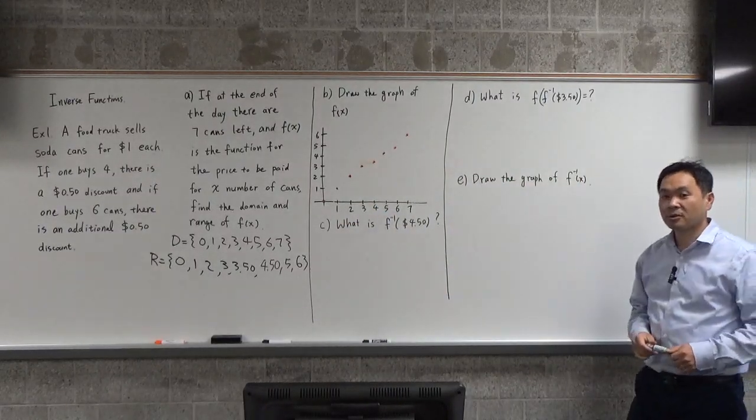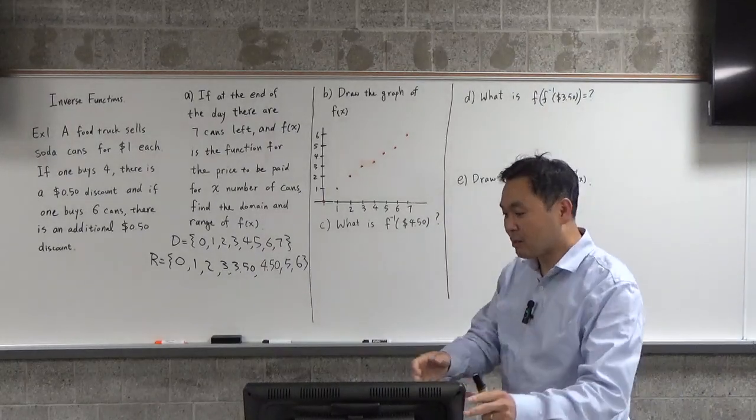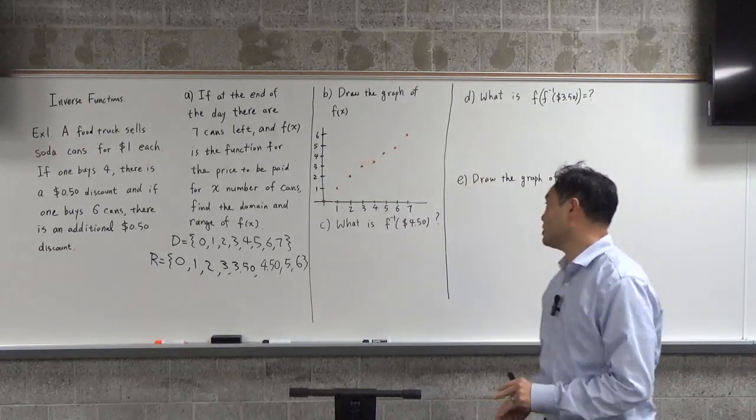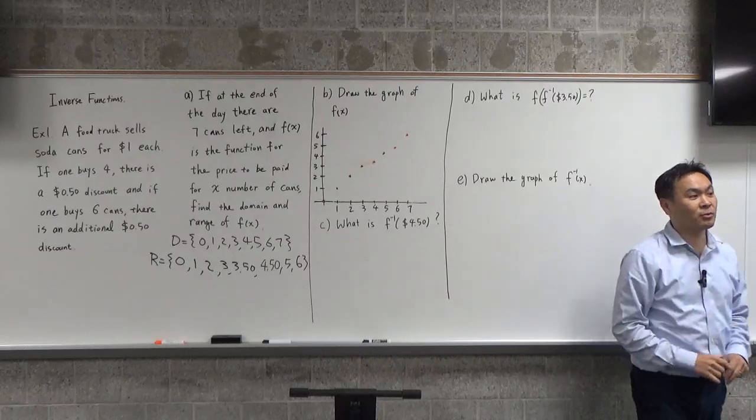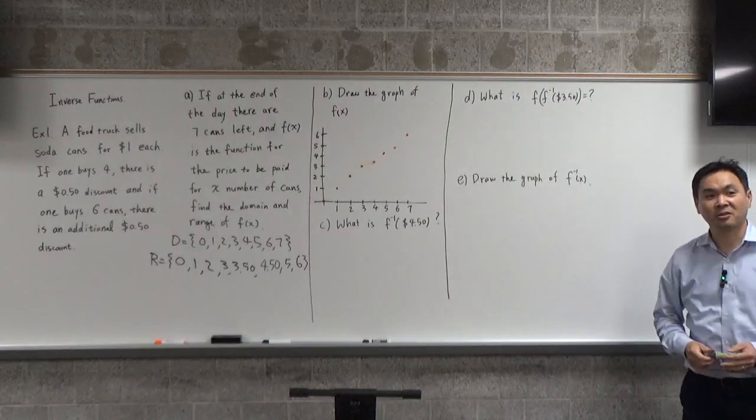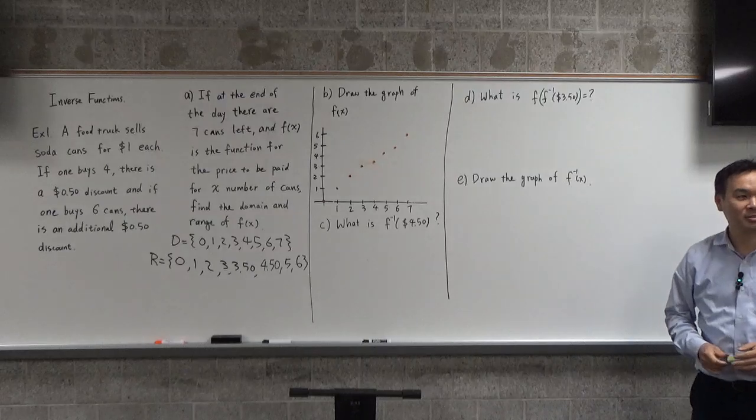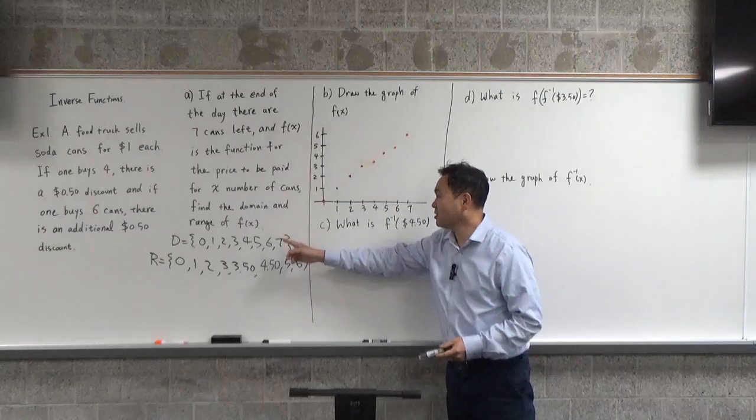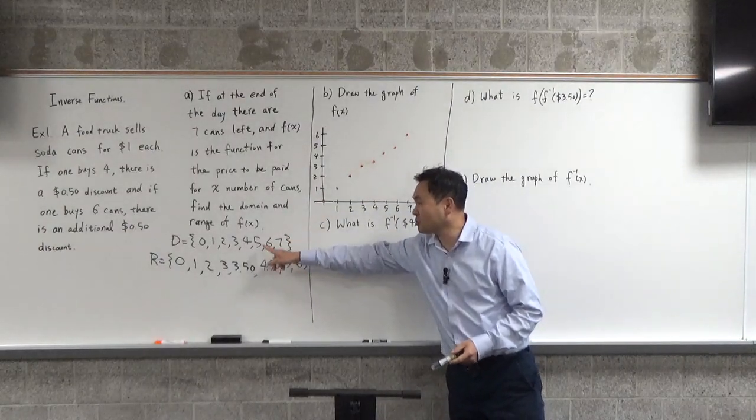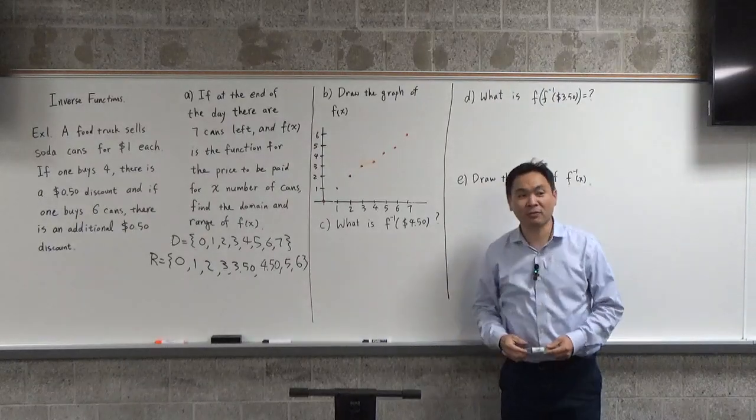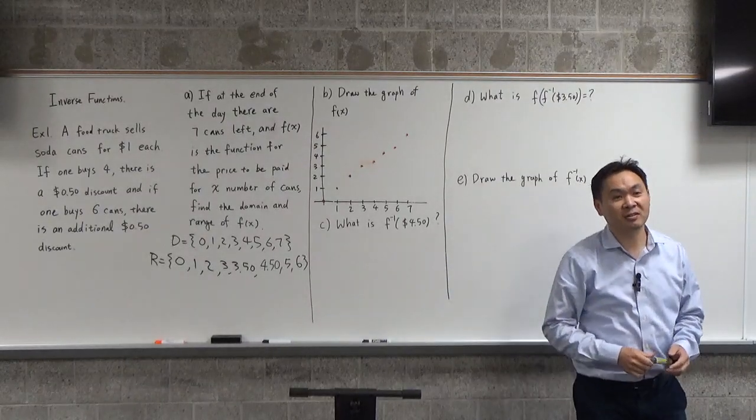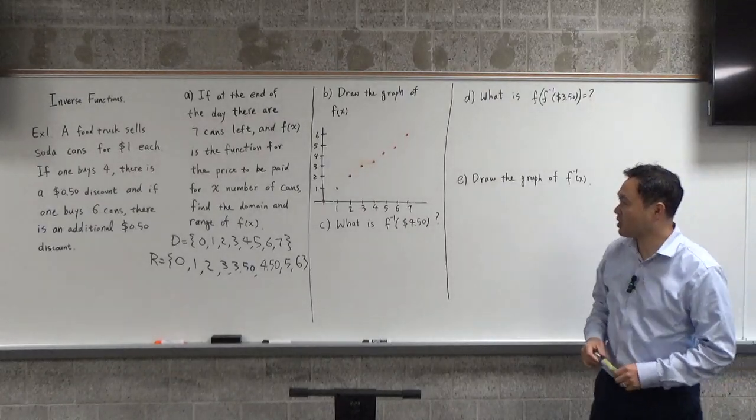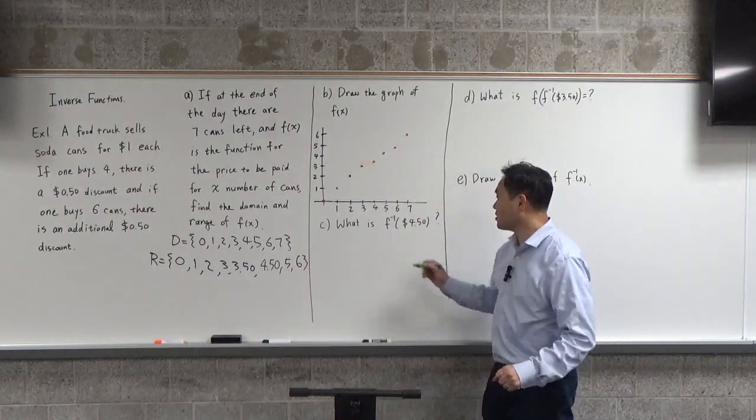Now comes the big topic of today. What is f inverse of $4.50? f(x) gives you the money if you provide the number of cans bought. What will be f inverse of $4.50? Yes, that's right - the answer is 5.